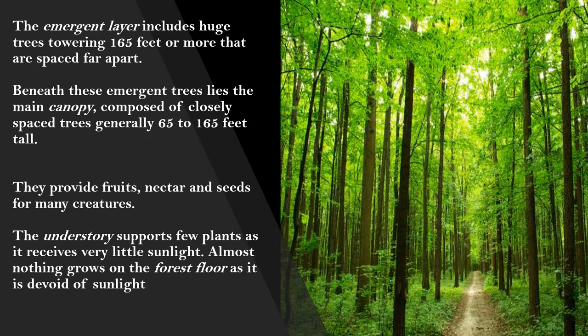Below these tall trees comes the canopy, which provides a roof-like structure. The canopy is composed of closely spaced trees, lower than the emergent layer, ranging from 65 to 165 feet tall. They provide large numbers of fruits, nectar, and seeds for many creatures. Below the canopy lies the understory, which supports few plants as it receives very little sunlight — the emergent layer and canopy above block most of the light.